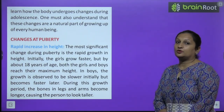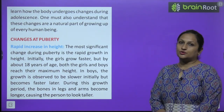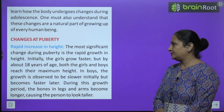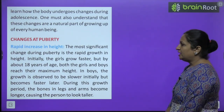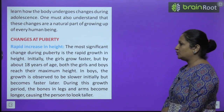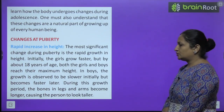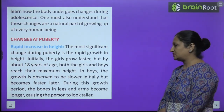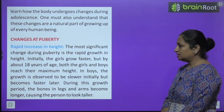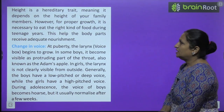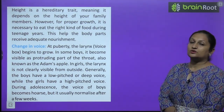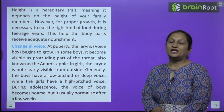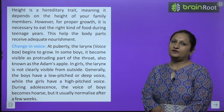What changes come during puberty? First is growth in height. The child's height begins to increase — hands, legs, and bones all grow to reach a certain height. The most significant change during puberty is the rapid growth in height. Initially girls grow faster, but by about 18 years of age both girls and boys reach their maximum height. In boys, growth is observed to be slower initially but then grows very fast, which is why boys' height eventually becomes more than girls'. During this growth period, bones of the legs and arms become longer, causing the person to look taller.